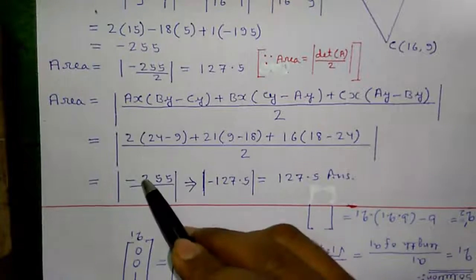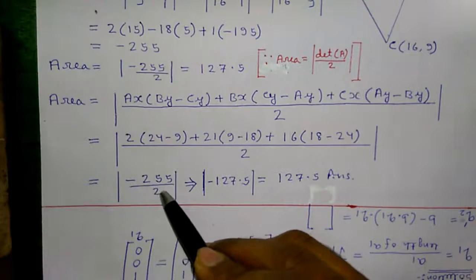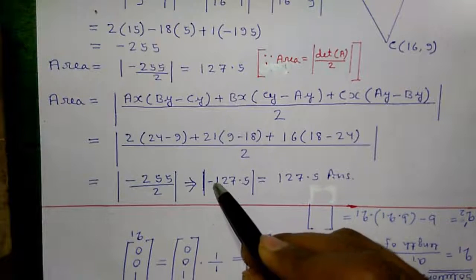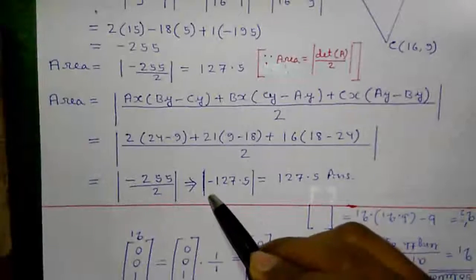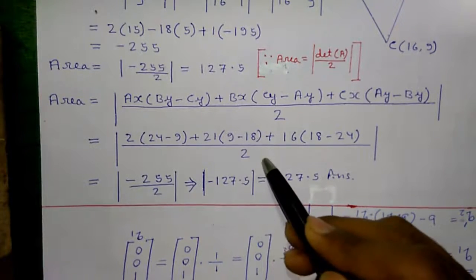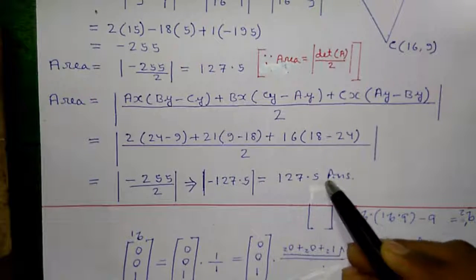So, that's equals to minus 255 by 2 and absolute of that. So, that is absolute of minus 127.5. Absolute means taking only the value, omitting the sign. That's equals to 127.5.